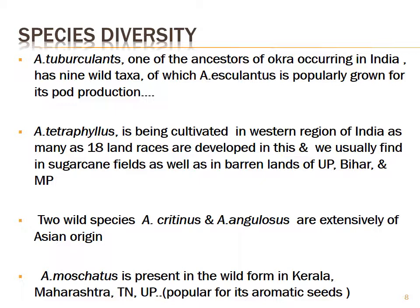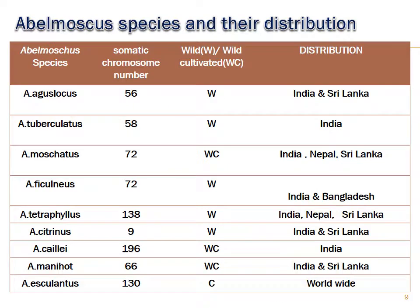Two wild species of cultivated Okra — Abelmoschus crinitus and Abelmoschus angulosus — are extensively of Asian origin. Abelmoschus moschatus is present in the wild form in Kerala, Maharashtra, Tamil Nadu, and Uttar Pradesh, and is popular for its aromatic seeds. Different species are listed here along with their chromosome numbers, which vary from 9 to 196.